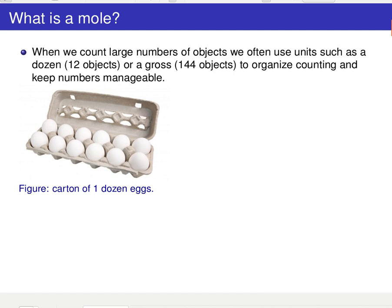So in general, when we count large numbers of objects, we're very familiar with using units, such as a dozen, which means 12 objects, or a gross, 144 objects, to effectively organize our counting and keep the numbers manageable. So for example, if you're going to the grocery store, you buy eggs in typically units of a dozen. So you ask for one dozen eggs rather than asking for 12.